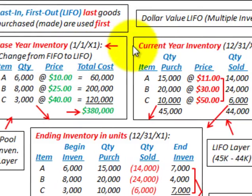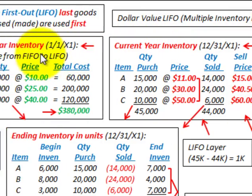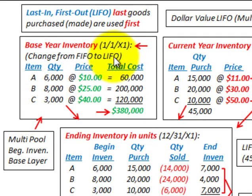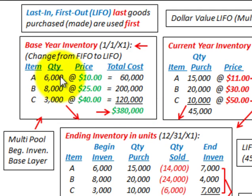We're going to be looking at one year here — how we convert from a FIFO method to a LIFO inventory method. For our base year or beginning inventory, we have specific quantities for items A, B, and C, and specific prices for each of those items in beginning inventory. We come up with a total cost of $380,000, which is simply the quantity times the price for each item.